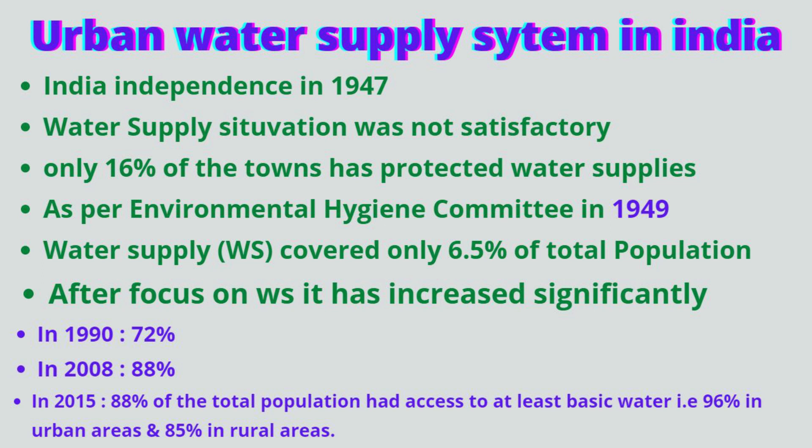As a result, access to improved sources of water increased significantly from 72% in 1990 to 88% in 2008. In 2015, 88% of the total population had access to at least basic water — 96% in urban areas and 85% in rural areas.